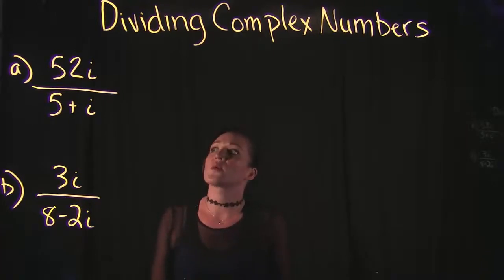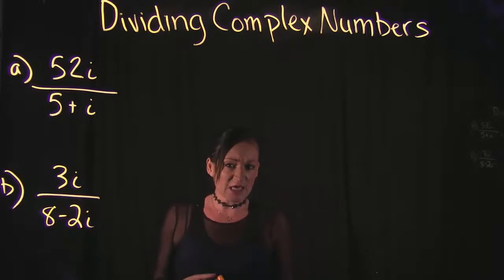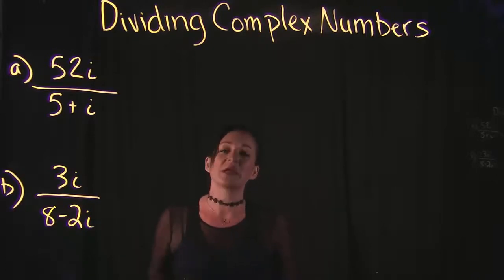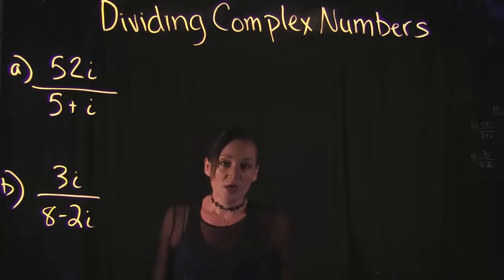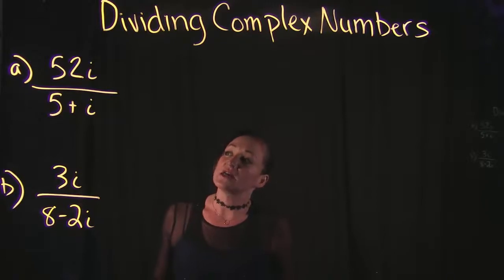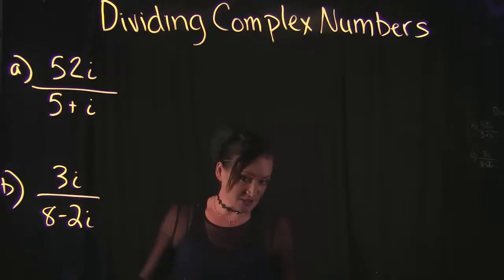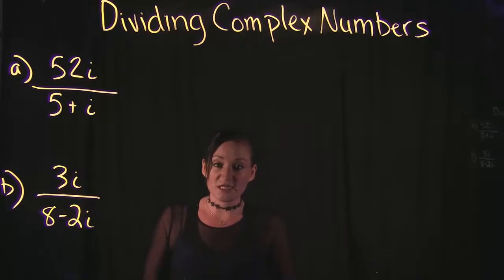The main thing to remember when dividing complex numbers in this form is we need to keep in mind what a conjugate is, because that's the main thing we're going to use in order to do this division. The conjugate is going to come into play when we look at the denominator — it's what we're going to be wanting to simplify.